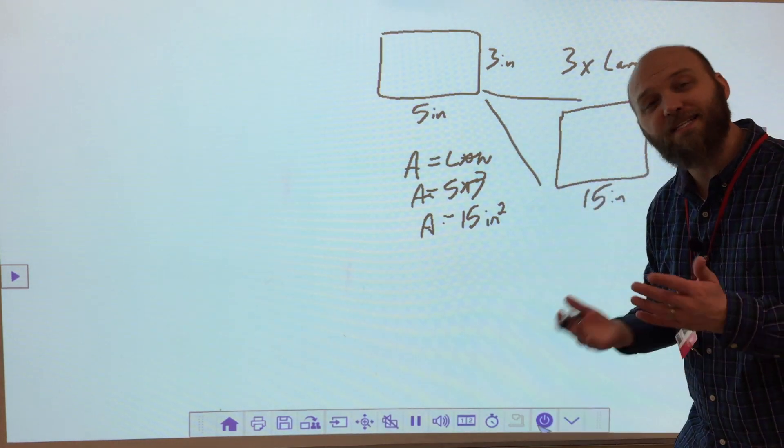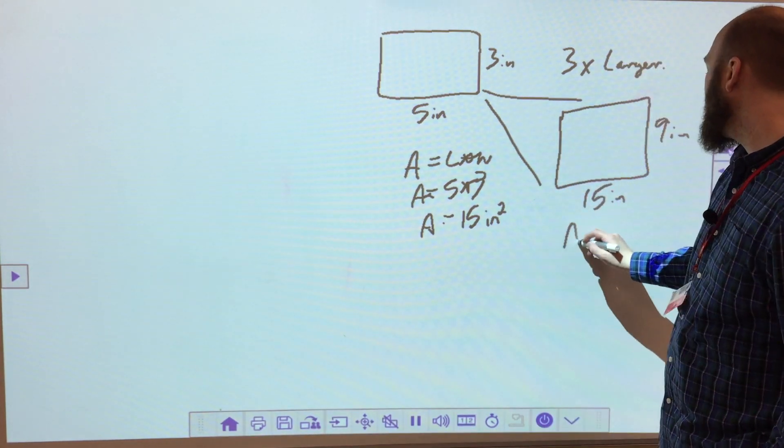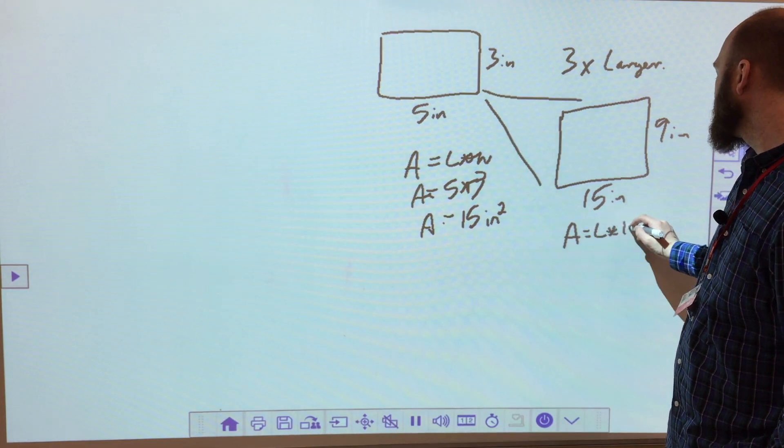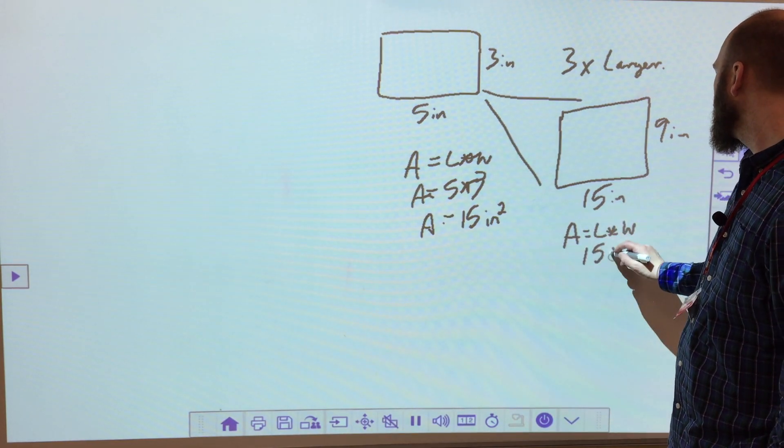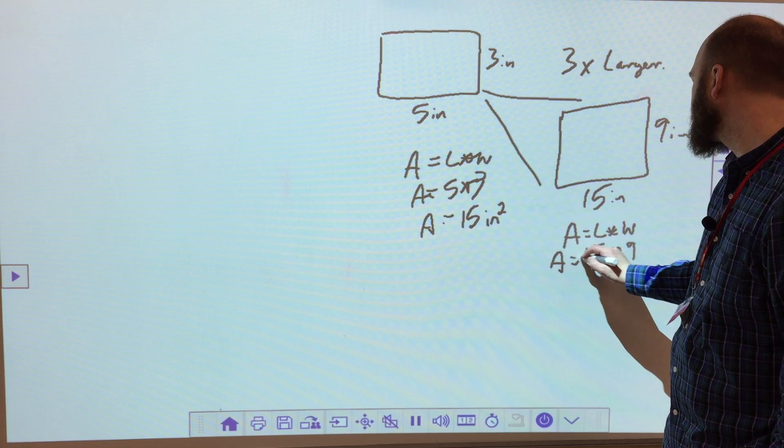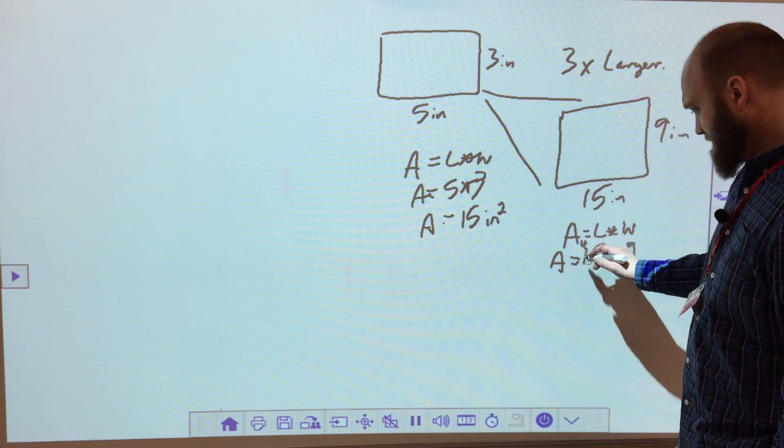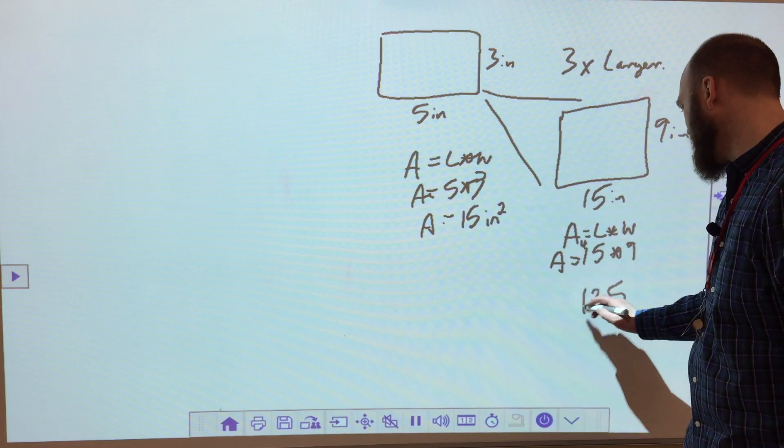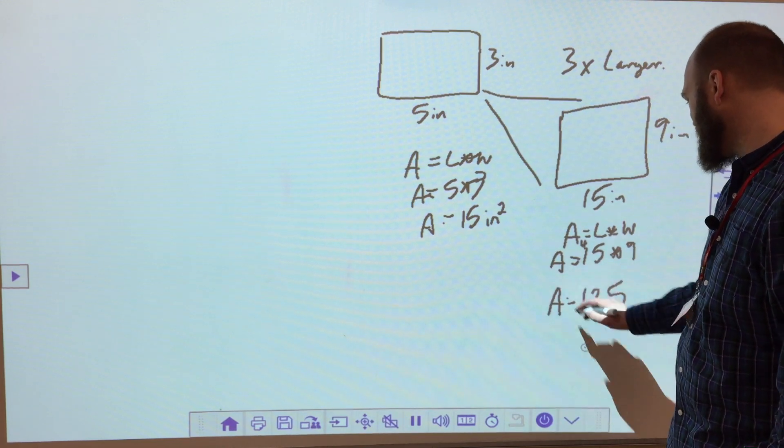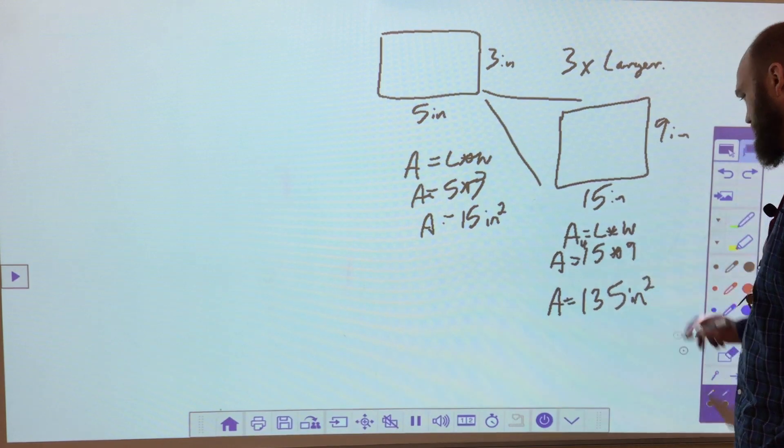I use the same formula and I take my time and I solve it. Area equals length times width, 15 times 9. 9 times 5 is 45, 9 times 1 is 9, plus 4 is 13. Area equals 135 inches squared.